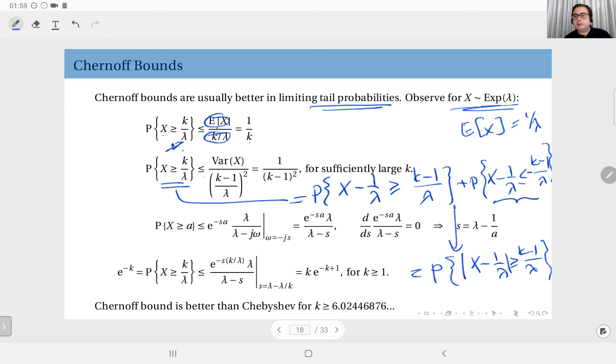So I can just apply Chebyshev inequality to this expression, and I get the variance of X divided by the square of this, k minus 1 over lambda squared. And I know the variance. If you remember, variance of X is 1 over lambda squared, so that is 1 over lambda squared divided by k minus 1 over lambda squared, so I get 1 over k minus 1 squared.